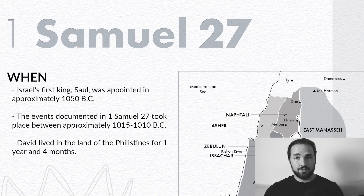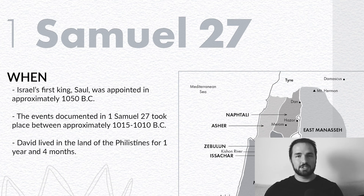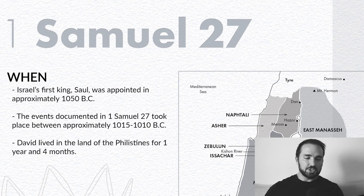Hey everyone, welcome back to To Be Like Christ for our Bible study today. We've got a short Bible study — we're going to talk about 1 Samuel chapter 27, and there's only 12 verses here, so hopefully we can get to this in five minutes. There is a free PDF, which you're seeing on the screen, but you can also download it at BeLikeChrist.com for free and share it with other people to study together.